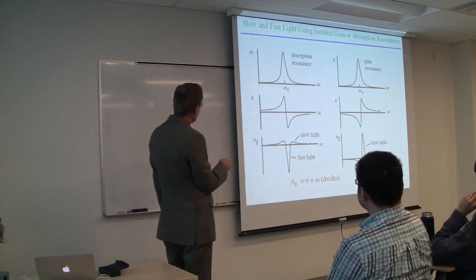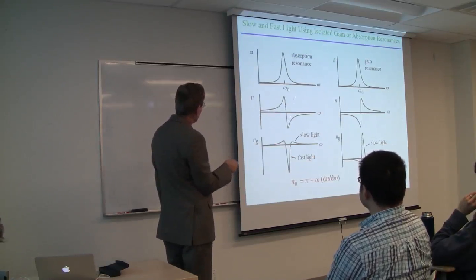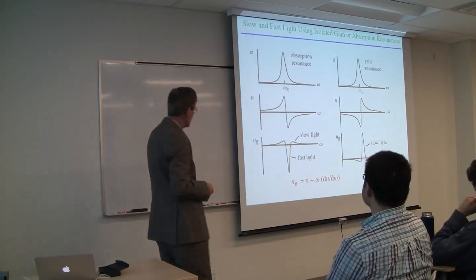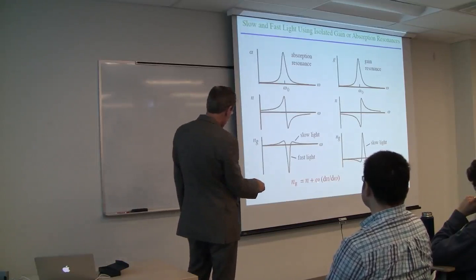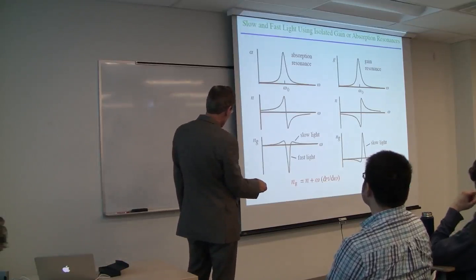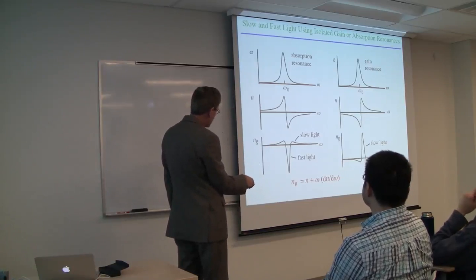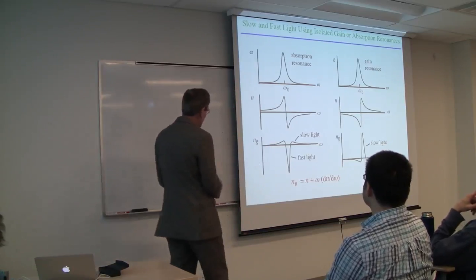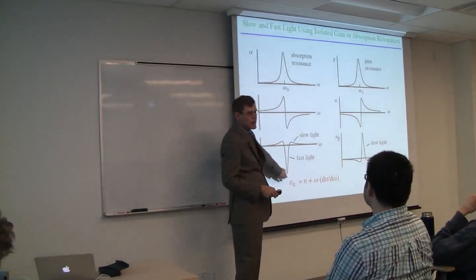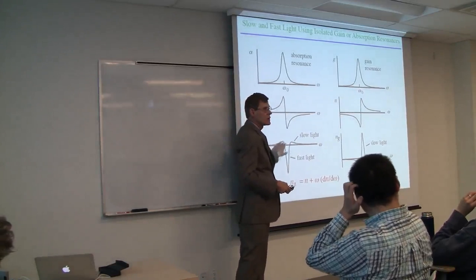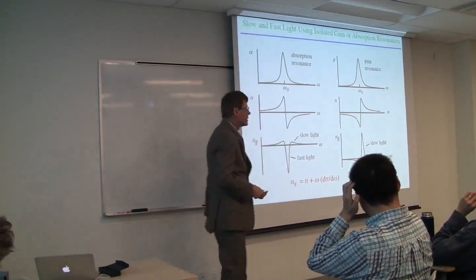Here is your absorption resonance. Whenever you have an absorption resonance like this, you have a refractive index distribution that looks like this. Take the derivative of n with respect to omega, multiply by omega, add it to n. This second term swamps the first term. At line center, you get fast light. In the wings of the line, you get slow light.